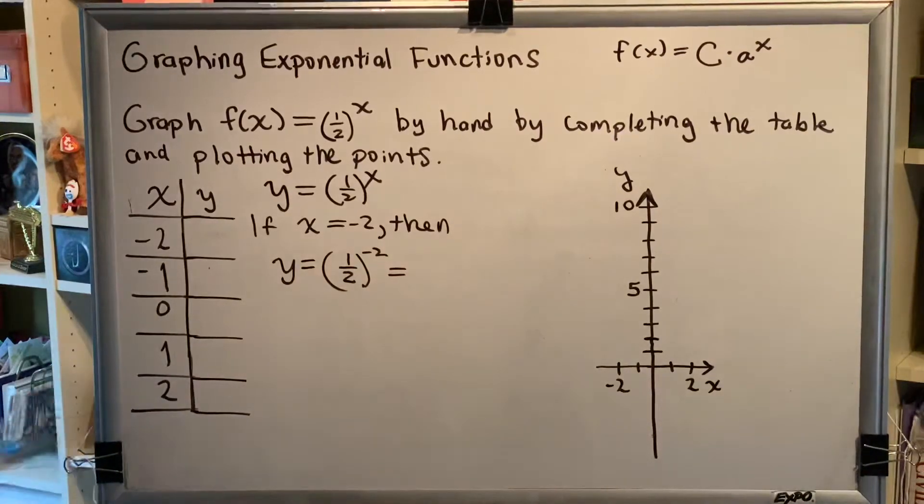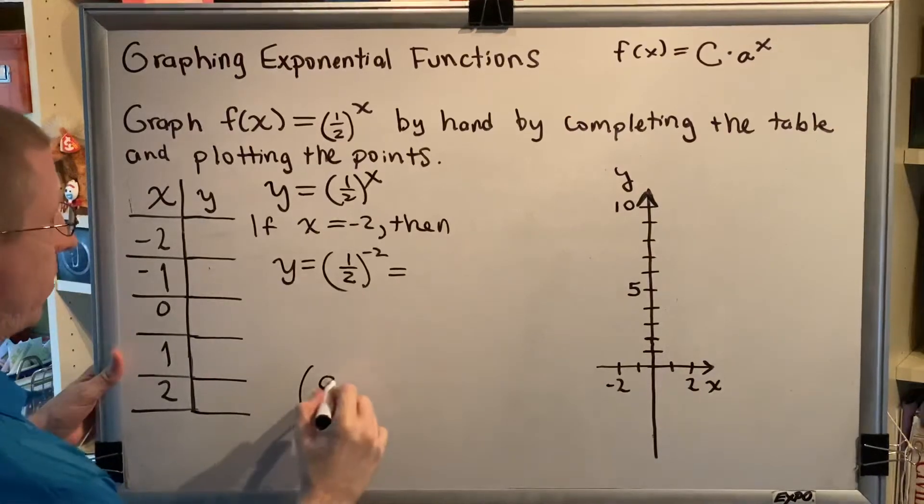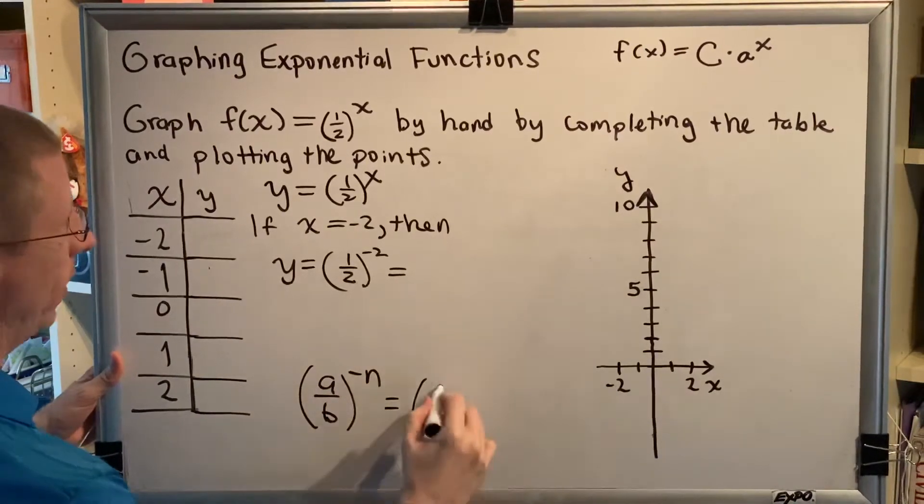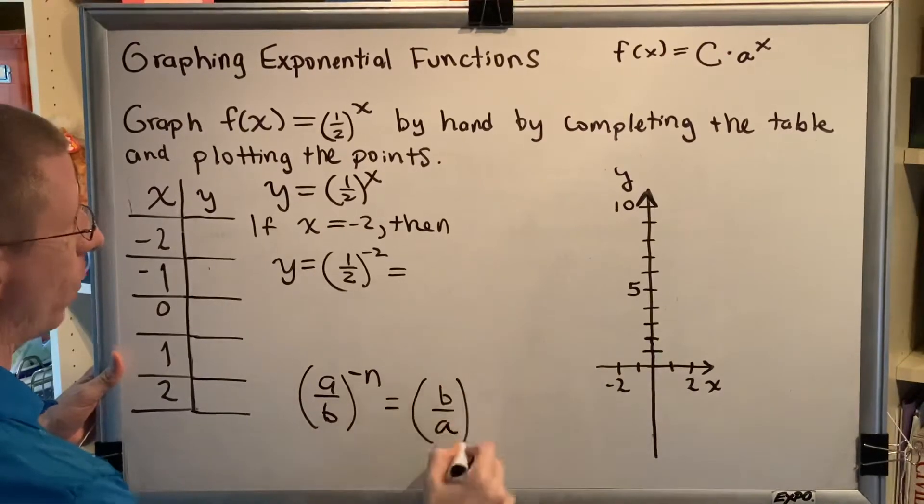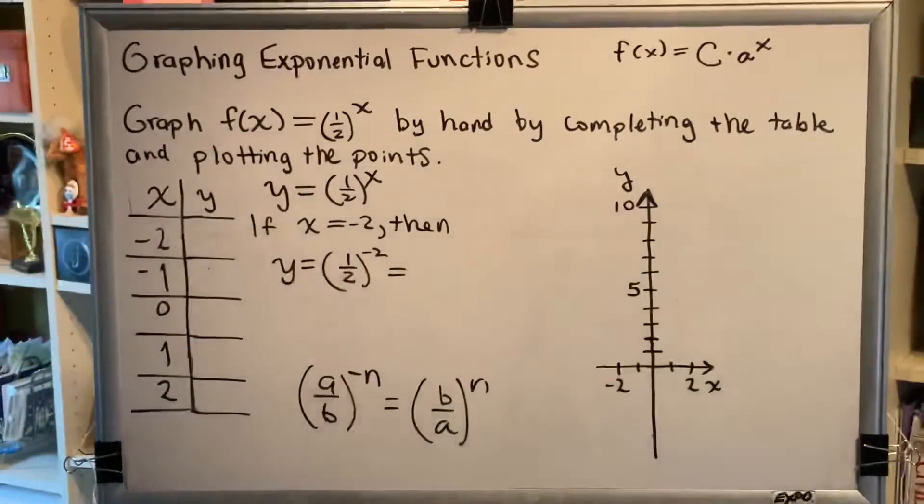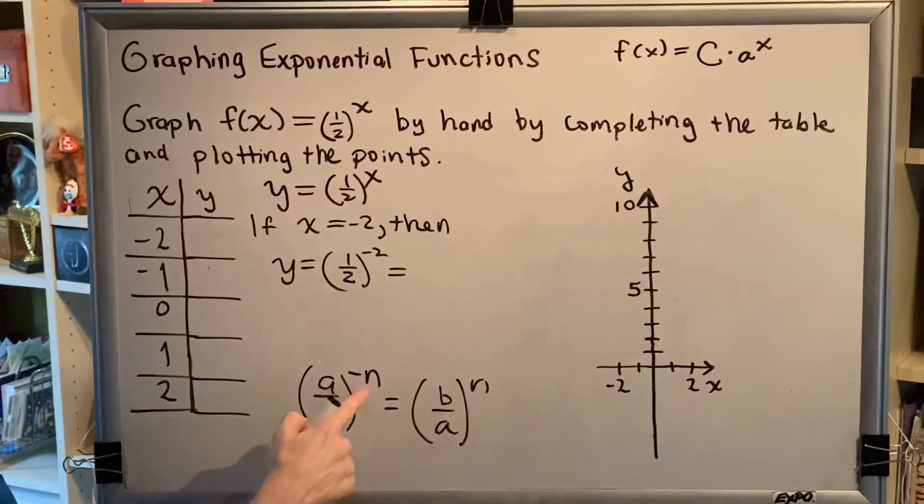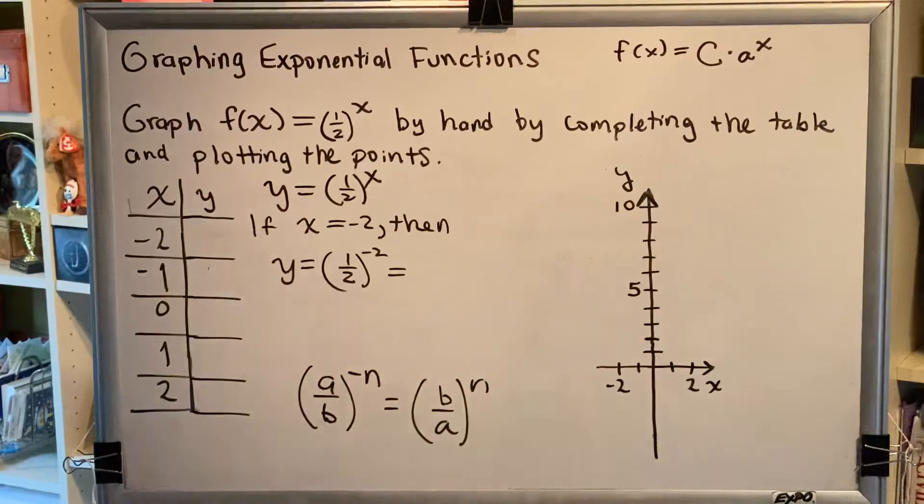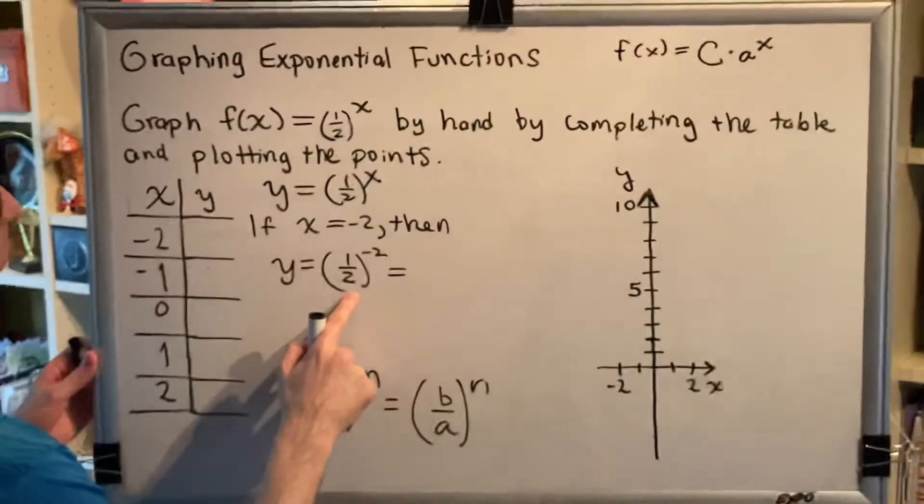Now there's a rule from intermediate algebra that you may not remember. It says that (a/b)^(-n) is the same thing as (b/a)^n. In other words, when you have a fraction raised to a negative exponent, you can just flip that fraction over and change the negative exponent to positive. So that's the tip we're going to use here.